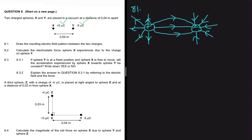So 8.2 is saying let's calculate the electrostatic force that sphere X experiences due to the charge on sphere Y. We're looking for the electrostatic force. We know fully well that the electrostatic force is equal to K Q1 Q2 divided by R squared.